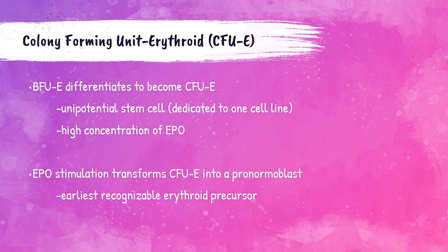The BFUE further differentiates into a colony forming unit erythroid, also called a CFUE. With a high concentration of EPO levels present, EPO transforms the CFUE into something called a pronormoblast. The pronormoblast is the earliest recognizable erythroid precursor cell — this is the first cell that we can see with our microscope.